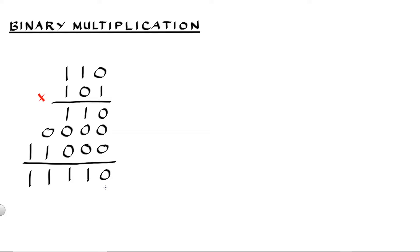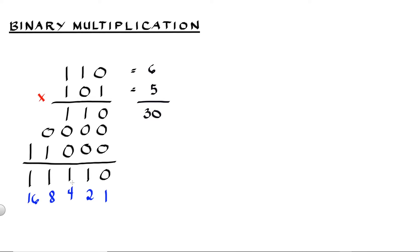We can verify our answer by converting the given values and product to decimal. This column is for the 1s, this is for the 2s, next is for 4, 8, and 16. For the multiplicand, we have 4 plus 2 is equal to 6. And for the multiplier, we have 4 plus 1 is equal to 5. And 6 multiplied by 5 is equal to 30. Our binary product is 16 plus 8 is 24, plus 4 is 28, and plus 2 is equal to 30. So our answer is correct.